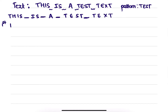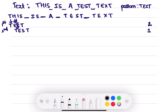Starting with the first iteration T-E-S-T: T matches, H doesn't match, therefore number of comparisons is 2. Second iteration: H doesn't match T, only one comparison. Third iteration T-E-S-T: I doesn't match T, therefore only one comparison.